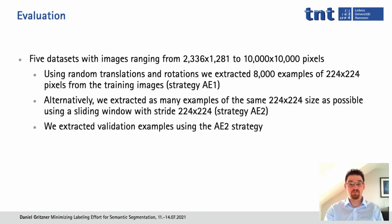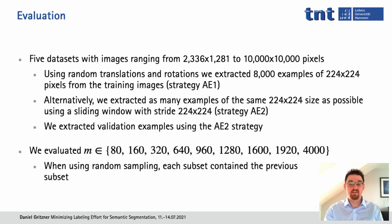For evaluation, we used five datasets with images ranging from 2,300 by 1,200 pixels to 10,000 by 10,000 pixels. For each dataset, we partitioned the images into training and validation images. To create our training dataset, we used random translations and random rotations to extract 8,000 patches of 224 by 224 pixels. For validation, we extracted patches of the same size using a sliding window of stride 224 by 224. We evaluated subsets of M equals 80, 160, 320, and so on — corresponding to 1%, 2%, 4% of the original dataset.